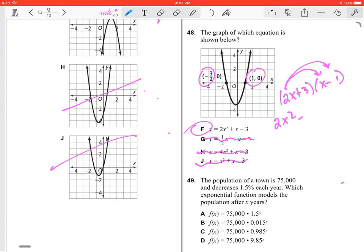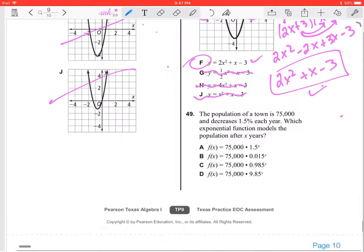So 2x times -1 gives me -2x. 3 times x gives me +3x. And 3 times -1 gives me -3. So that's 2x² + x - 3. Yes, that matches. That is correct. We are good on that question.